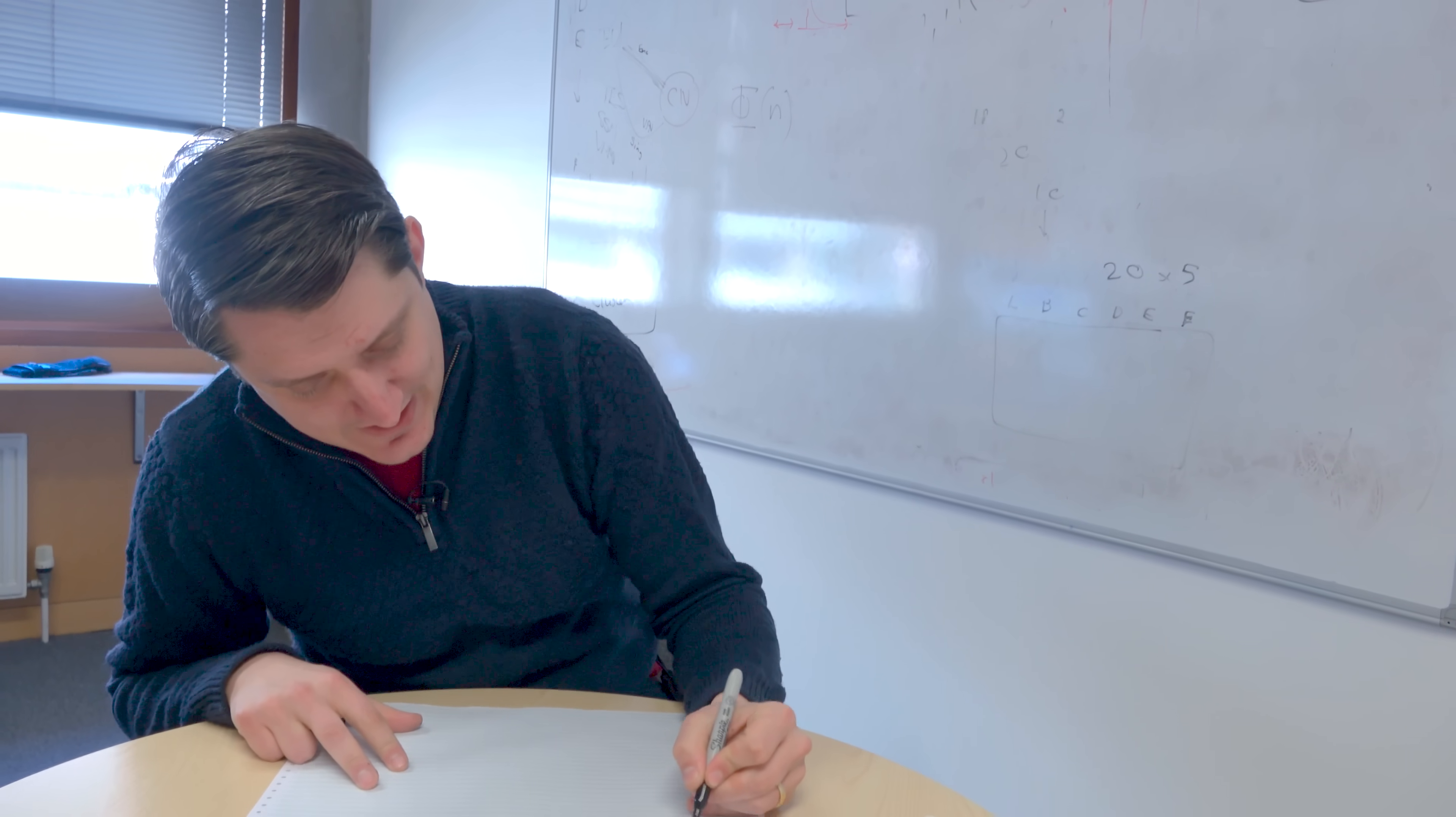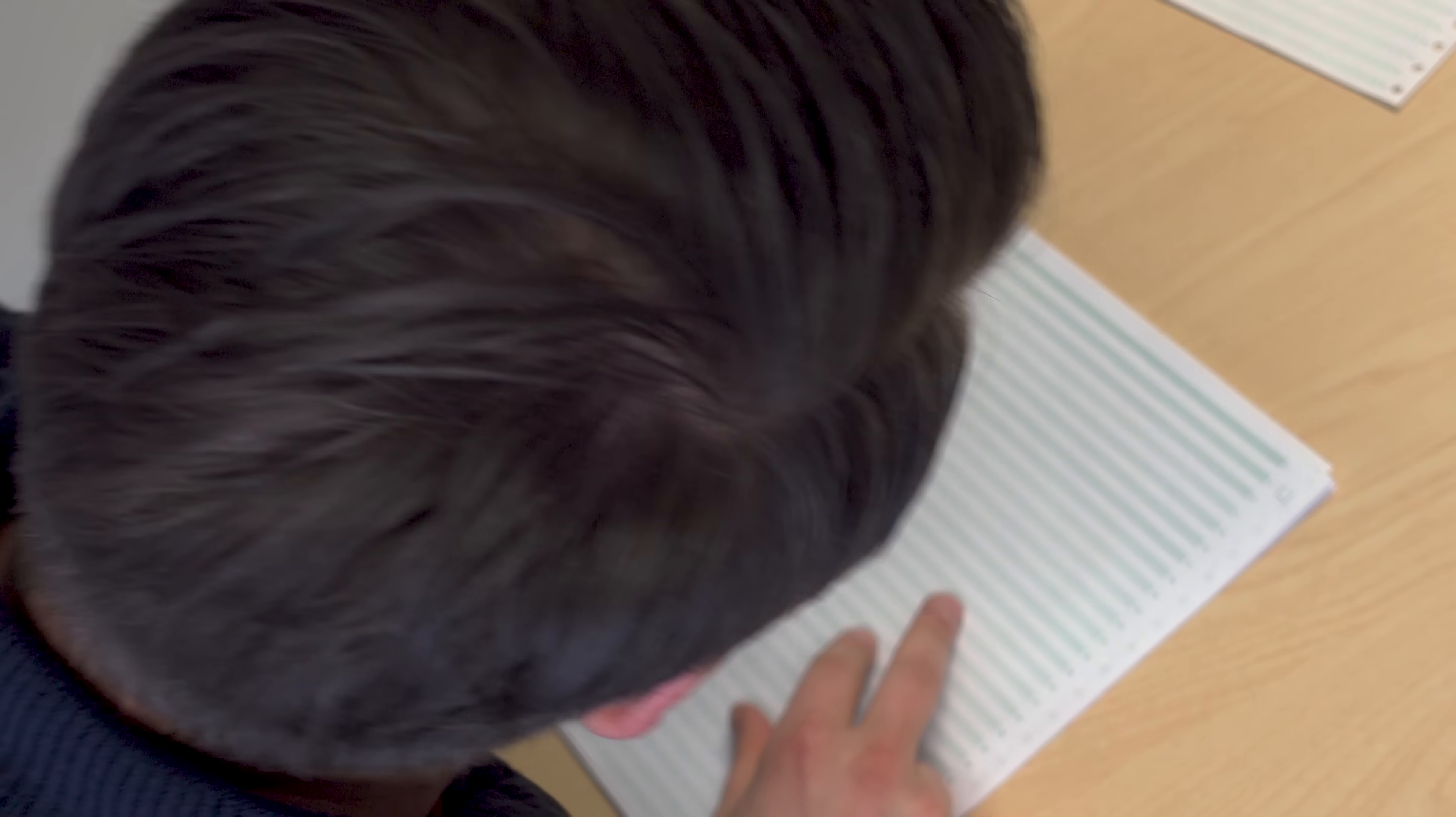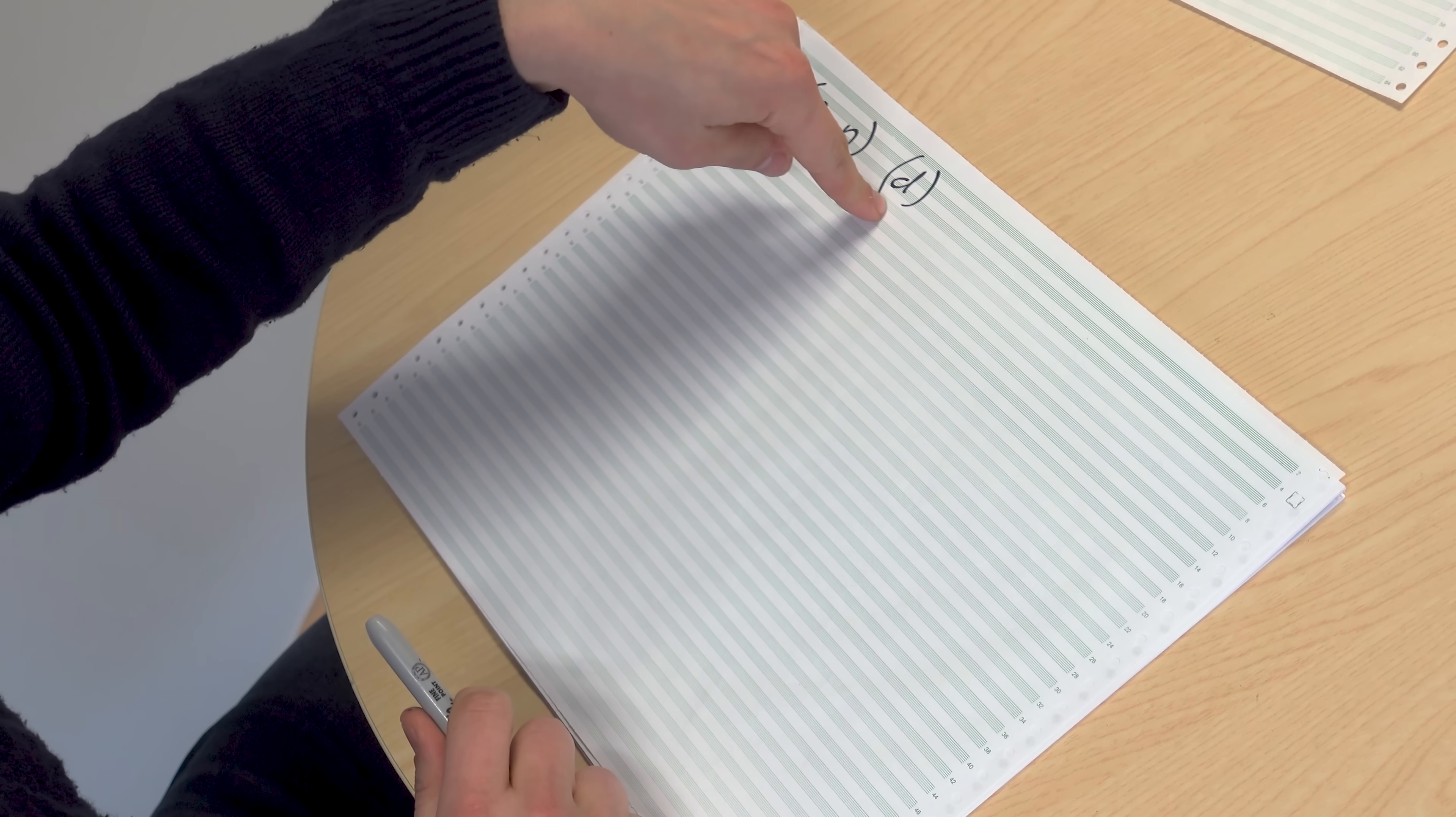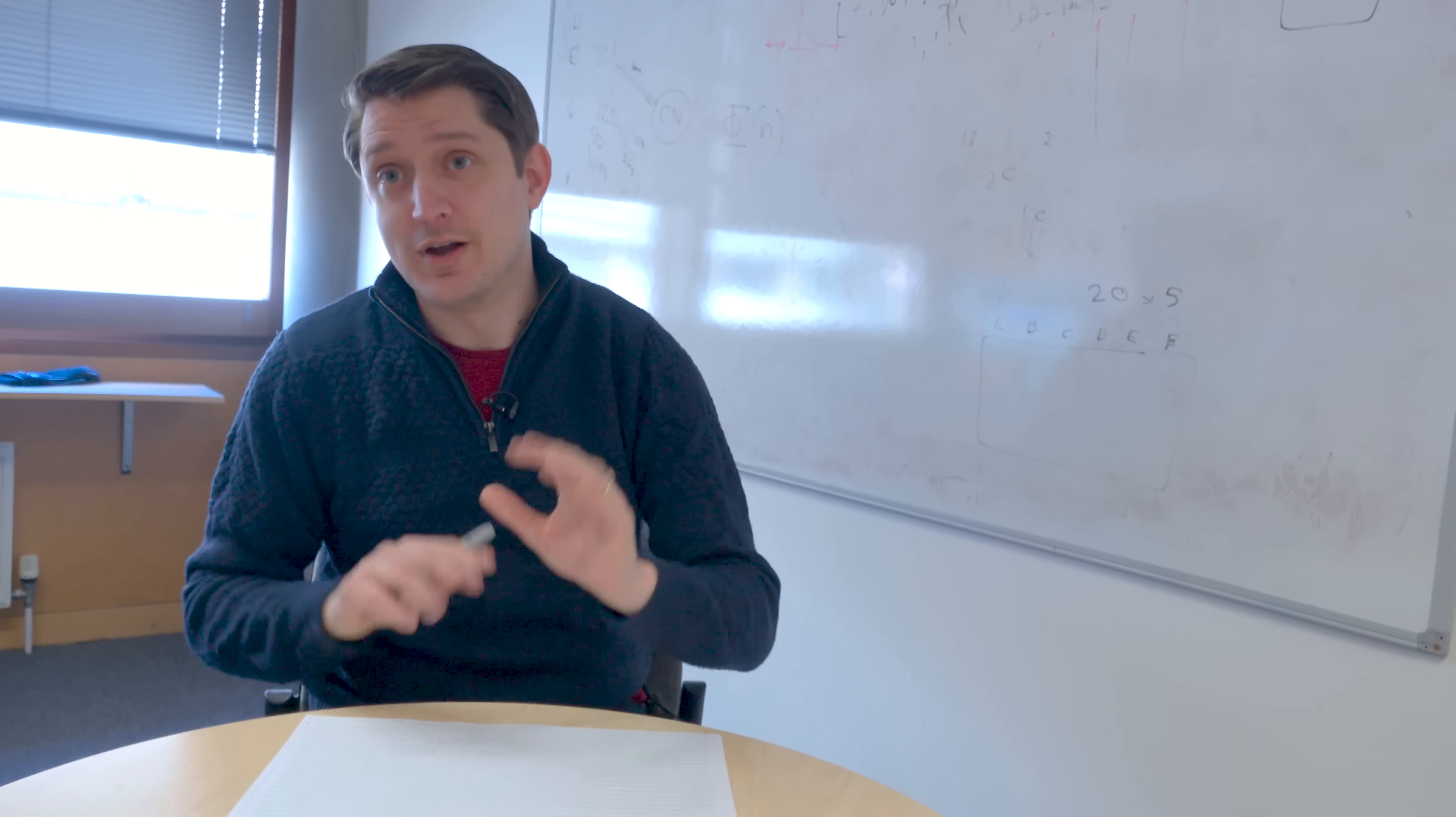Now the public key is going to be some value E and a very large number N, and the private key is going to be D. E and N are not secret, so this is public, and D is the private key. E is usually 65537, which I mentioned before, best number ever.